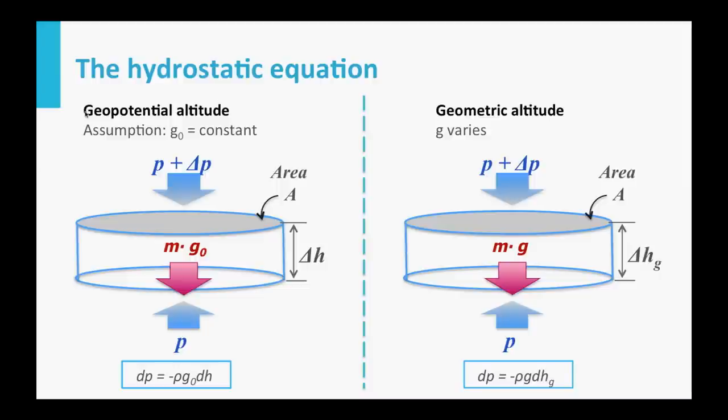You see here the difference expressed in the equations. So dh without an index is the geopotential altitude, because this is the default altitude which we always use. The hg is the geometric altitude with the correct g. Let's have a look at what the difference is.